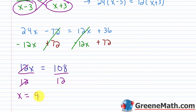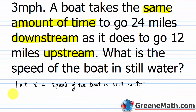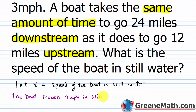So I've found the answer. x was the speed of the boat in still water, and x equals 9. The boat travels 9 miles per hour in still water, which answers our question.